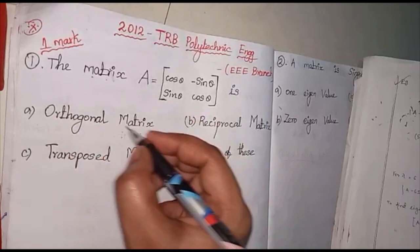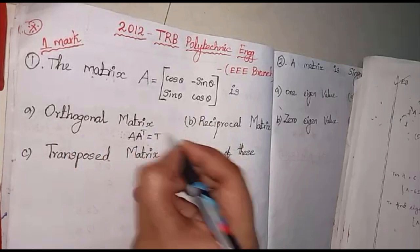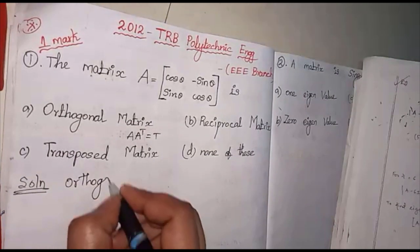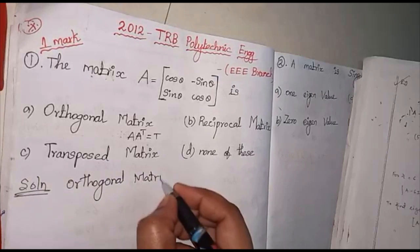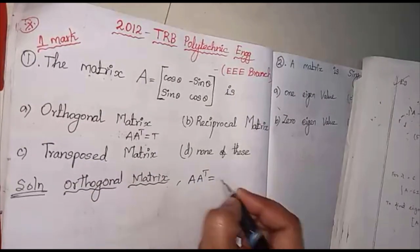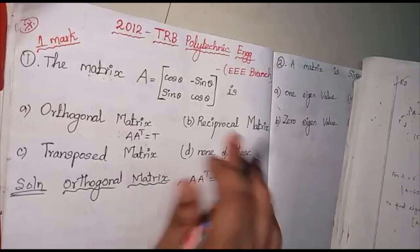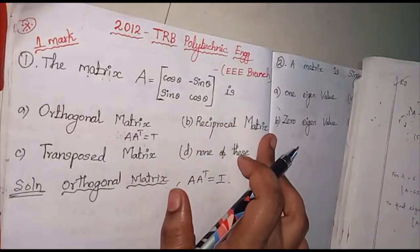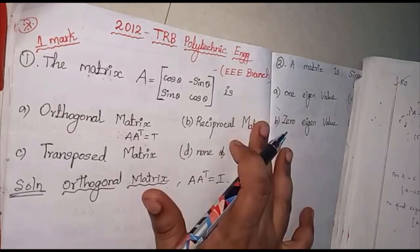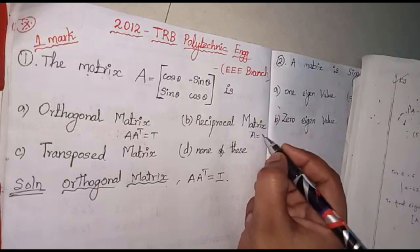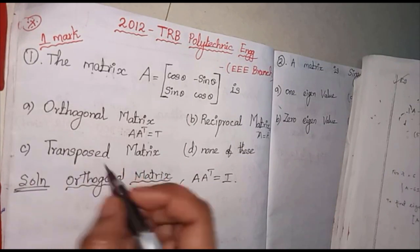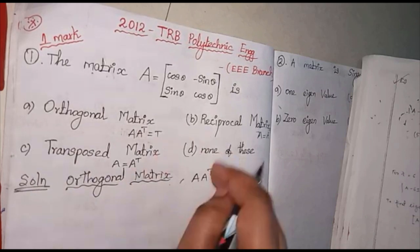The first option is orthogonal matrix. The condition for an orthogonal matrix is A times A transpose equal to I, the identity matrix. The next one is reciprocal matrix — A equals A inverse. If you have a transpose matrix, the condition is A equal to A transpose. That covers the options above.